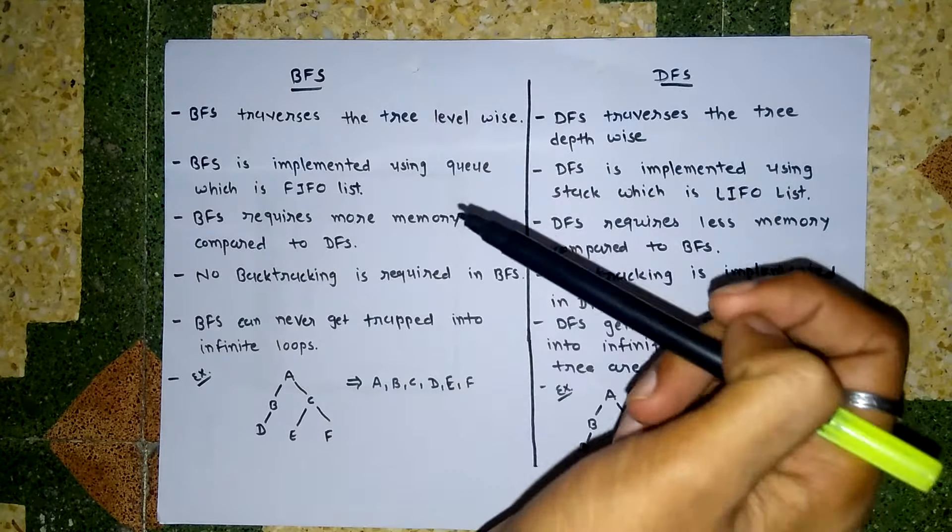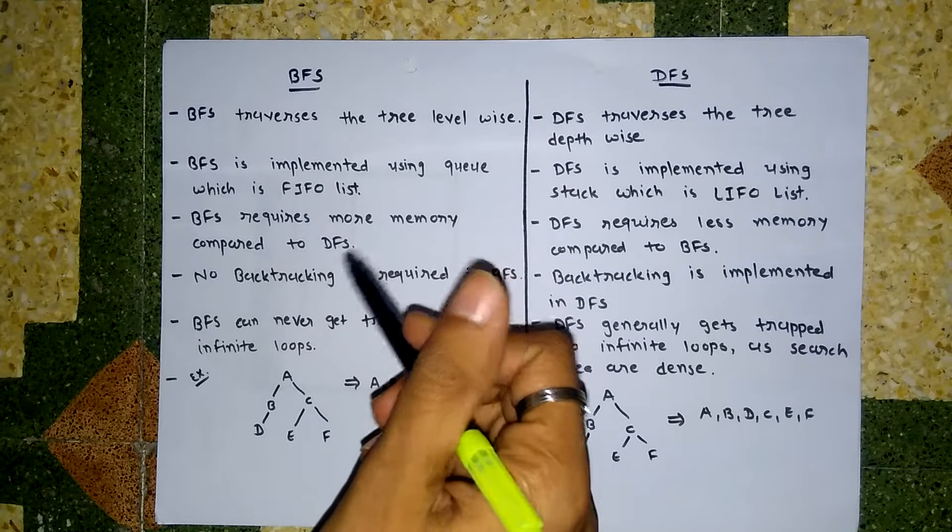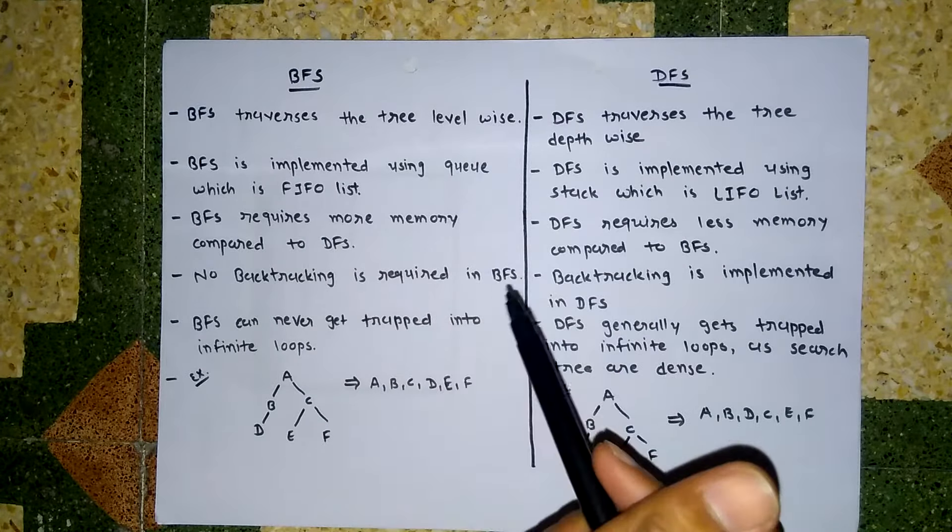The second difference is BFS is implemented using a Queue, which is a FIFO — first in first out — list. And DFS is implemented using a Stack, which is a last in first out list. If you want more detail about BFS and DFS, you can watch my BFS and DFS videos to get an idea about how they work.